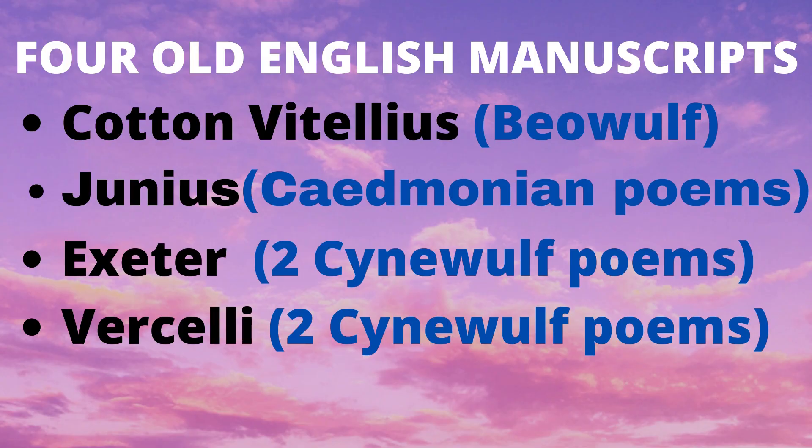The manuscripts in which Old English Poetry is preserved are unique and are four in number. First, Cotton Vitellius, which contains Beowulf, but it is partially burnt. Second, the Junius Manuscript, which contains Caedmonian Poems. Third, the Exeter Book, which contains two Cynewulf poems. Fourth, the Vercelli Book, which also contains two Cynewulf poems.